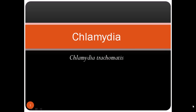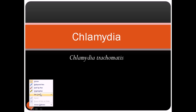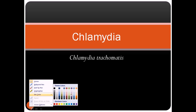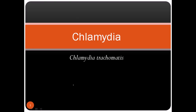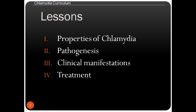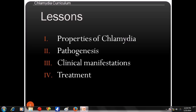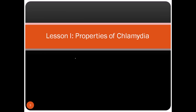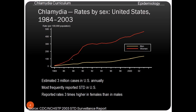Welcome back. In this series of videos we'll be talking about Chlamydia and the infections it causes. There are three major species of Chlamydia we are going to discuss, and one of the most important is Chlamydia trachomatis. In this course we'll cover four sections: general properties of Chlamydia, pathogenesis, clinical manifestations and diseases caused, and finally treatment and prevention.